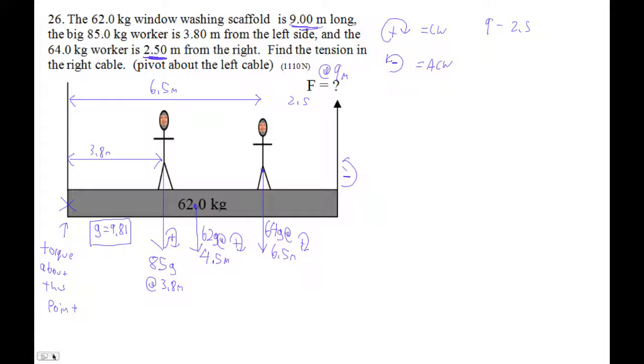So now we can set up our torque expression. Let's change to red. So I'm going to torque about the left side. Torquing about the left side, I've got some unknown force times 0. Then I've got the first one is this guy, so I'm going to say plus 3.8. Remember, torques are RF, radius times force. So plus 3.8, we're 3.8 over.